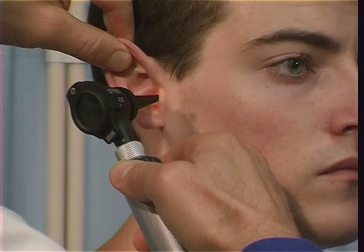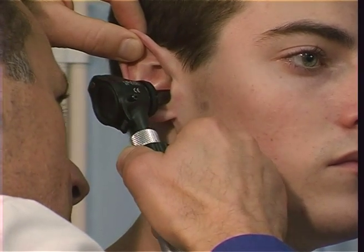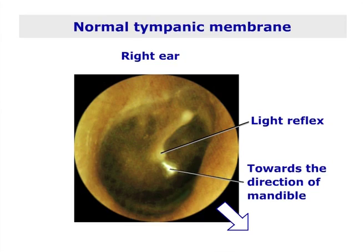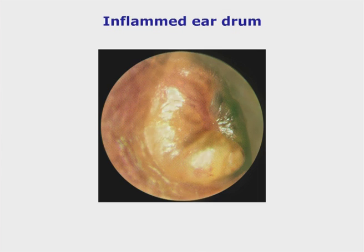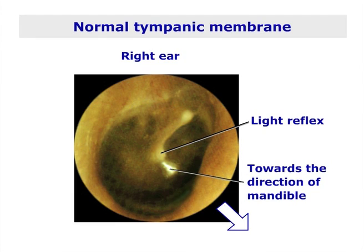Whilst continuing to lift the ear, slowly progress into the canal and try to identify the eardrum. The normal tympanic membrane is a semi-transparent, slightly curved, cone-shaped structure. Next, identify the handle of the malleus, which lies on the deep surface of the tympanic membrane. The light source of the otoscope reflects off the surface of the tympanic membrane in a cone of light in the direction of the angle of the mandible — this is known as the light reflex of the eardrum. In an abnormal tympanic membrane, this light reflex is dull or absent.